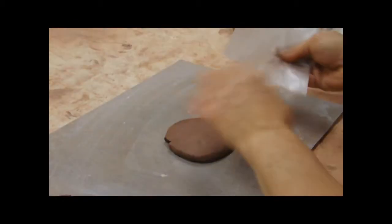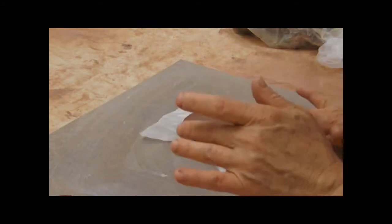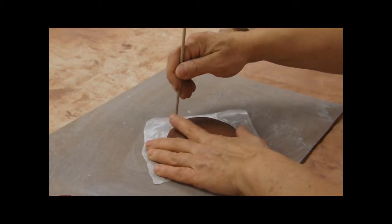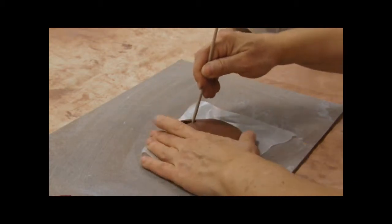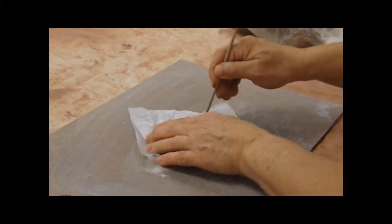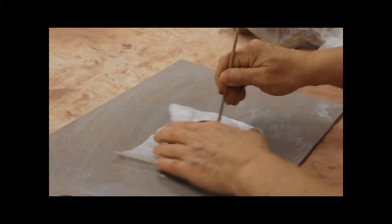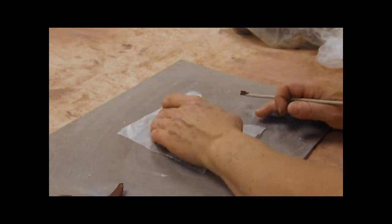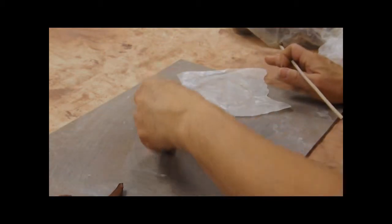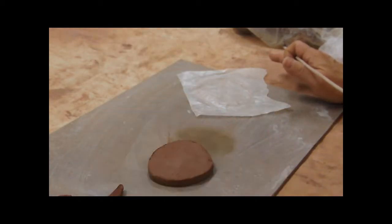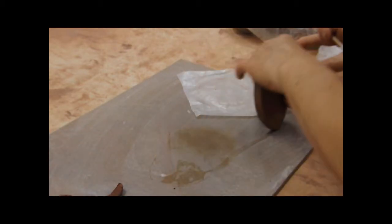So take a piece of wax paper so that you can move it, and then you're going to cut the shape of your pot. Pick it up, roll it. Another reason why you want to take this part off is that's usually the thinnest part of your bottom and this makes it pretty much even.